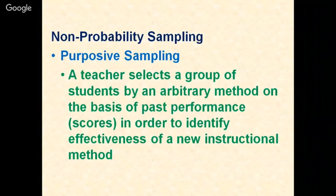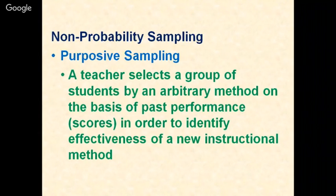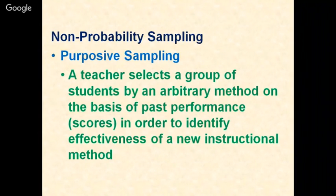Coming to non-probability sampling. First is purposive sampling, where a teacher selects a group of students by an arbitrary method based on past performance in order to identify the effectiveness of a new instruction method. Students may be divided into two groups on the basis of previous class test results or half-yearly examination marks. It is not random — purposely selected. This involves selecting the nearest and most convenient people to participate in the research.